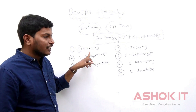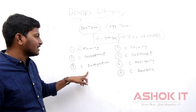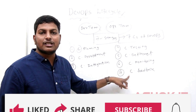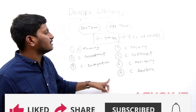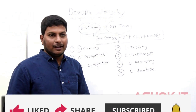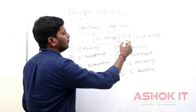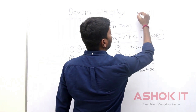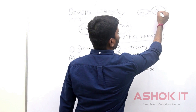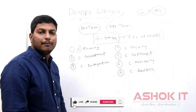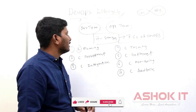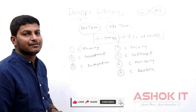Continuous planning, continuous development, continuous integration, continuous testing, continuous deployment, continuous monitoring, continuous feedback. These seven stages are called the DevOps lifecycle stages. If you see the DevOps logo also, an infinite symbol will be available — here dev, here ops. So development plus operations is a continuous activity in the application. I hope you understood what is the DevOps lifecycle.